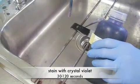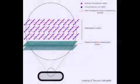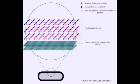Stain the slide first with crystal violet, which will turn gram-positive bacteria purple by adhering to peptidoglycan.